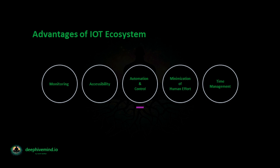Automation and Control: Physical objects are connected to each other with wireless technology, and automation plays a huge role in the Internet of Things. It allows devices to work without human intervention, as they communicate with each other to send and receive information at all times. Human Effort Minimization: IoT devices perform various tasks with much ease compared to human beings, reducing dependency on manual labor. Time Management: IoT applications in various industries lead to quicker operations, reducing the time factor.